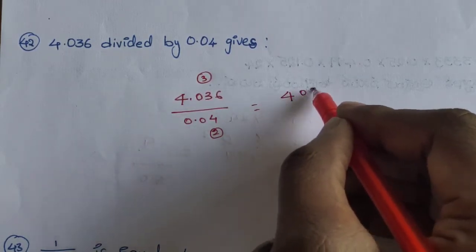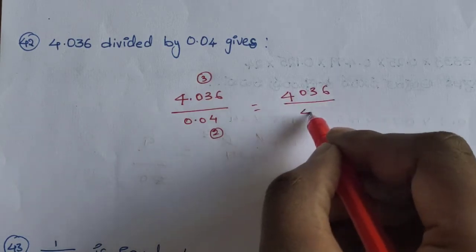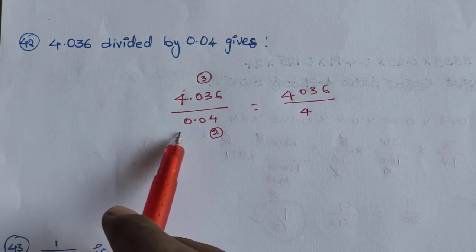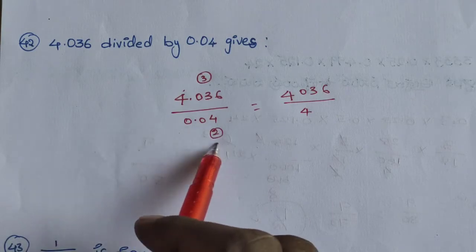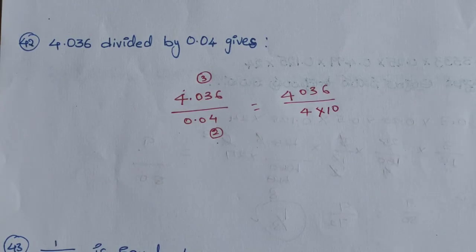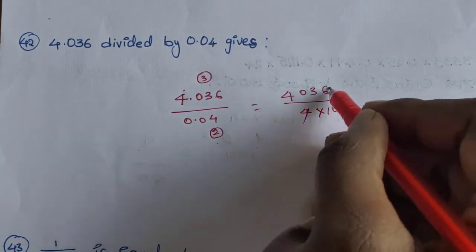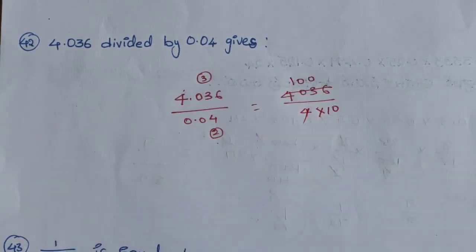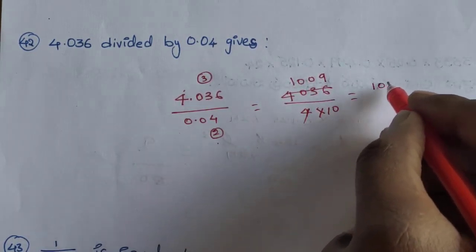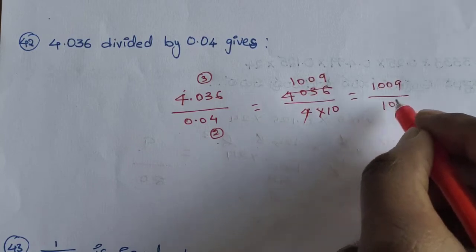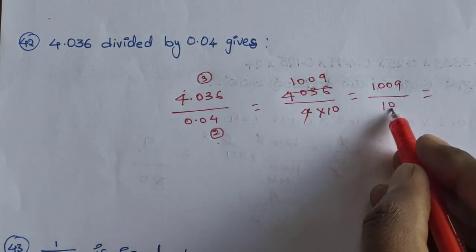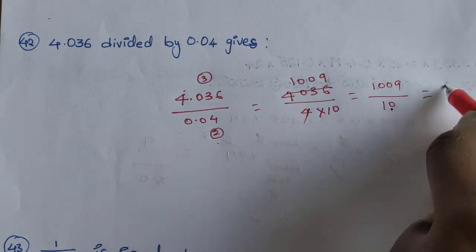So 4036 divided by 4. That is: 4 goes into 4036 — 4 is 3, then 2, 2. Multiply by 10 to get 400. Then 35, 36 — okay, 100 by 10 by 10.